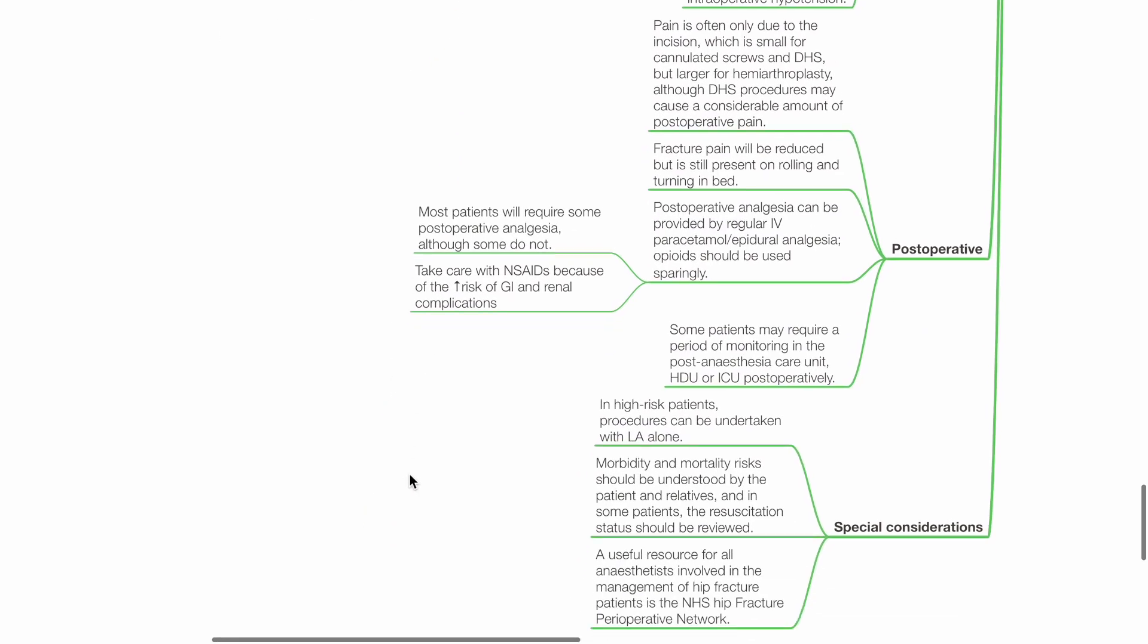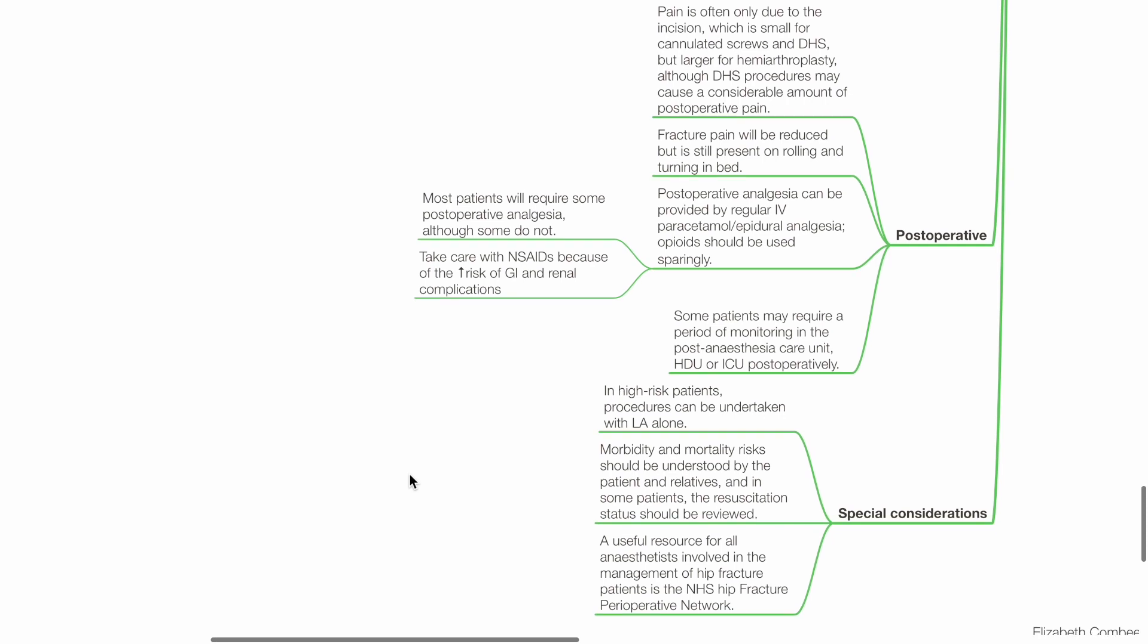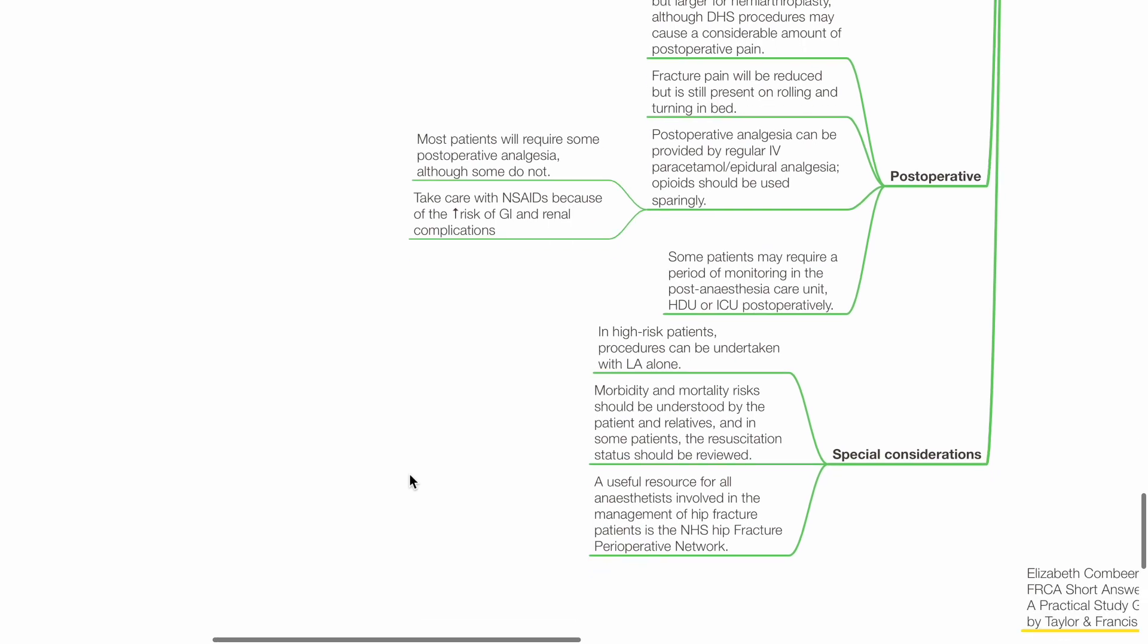Post-operative. Pain is often only due to the incision which is small for cannulated screws and dynamic hip screw but larger for hemiarthroplasty although DHS procedures may cause a considerable amount of post-op pain. Fracture pain will be reduced but is still present on rolling and turning in bed. Post-op analgesia can be provided by regular IV paracetamol or epidural analgesia. Opioids should be used sparingly. Most patients will require some post-op analgesia although some do not. Take care with NSAIDs due to the risk of GI bleeding and renal complications. Some patients may require a period of monitoring in the PACU, HDU or ICU.